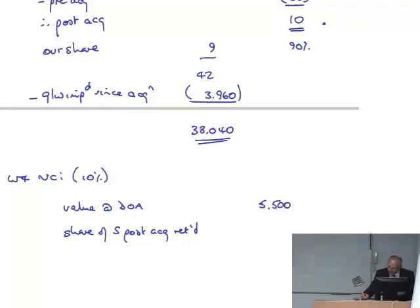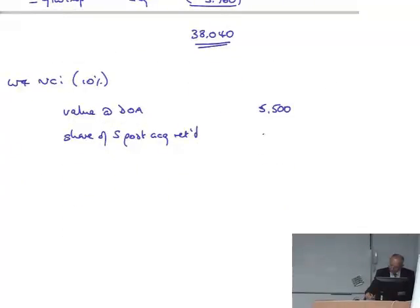So 6,500. Less their share of the goodwill impaired since acquisition. 4,400.